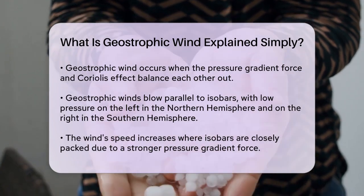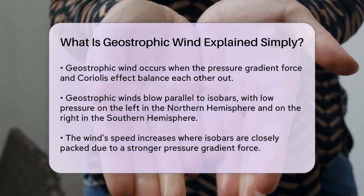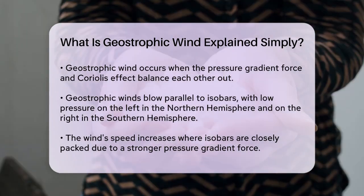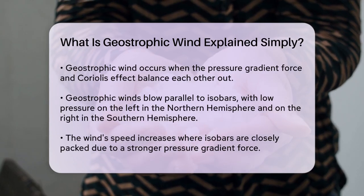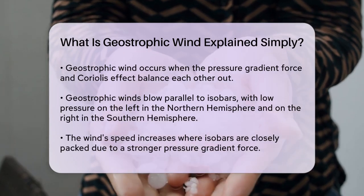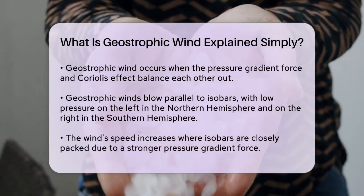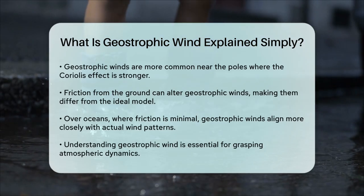Geostrophic winds are faster where isobars are packed closer together, because the pressure gradient force is stronger in these areas. They are also more common near the poles, where the Coriolis effect is stronger.